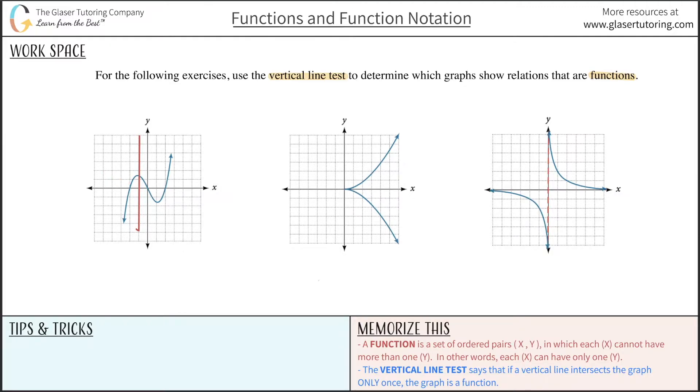Okay, so basically to sum it up, if a vertical line intersects, as we wrote down here under the memorize this section, the vertical line test says if the vertical line intersects the graph only once, then the graph is a function. So here it intersects the graph once and only once. It does not intersect it twice. Therefore, it is a function.